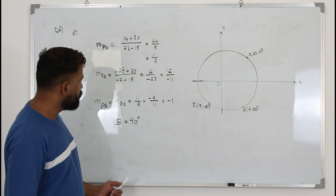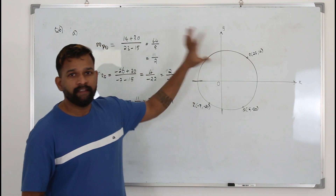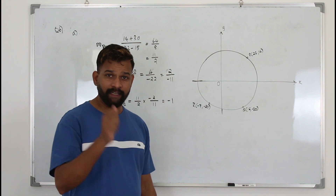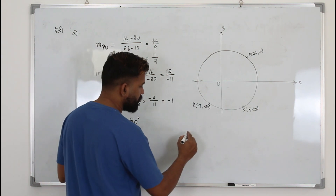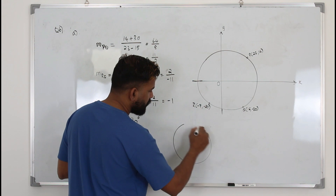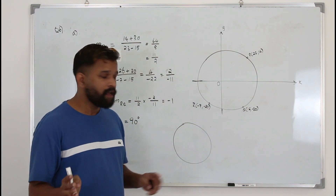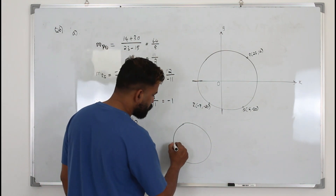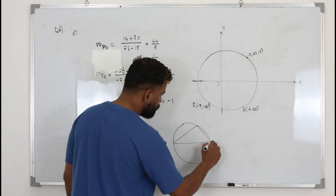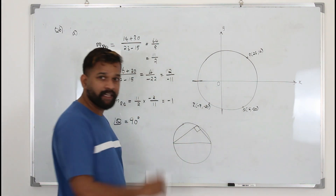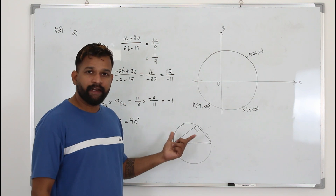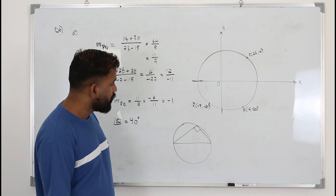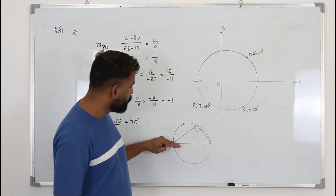In part B, they want you to find the center of the circle. You need to know a circle theorem: if you take any circle and draw a right angle triangle inside it with all vertices touching the circumference, the hypotenuse of the right angle triangle will be the diameter of the circle.